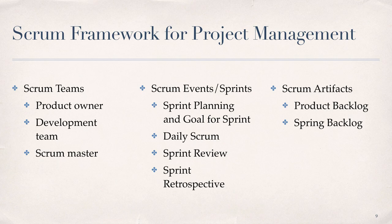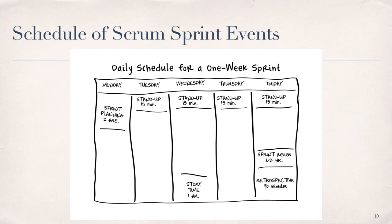Clearly, there is much more to the Scrum framework than we have covered here, but you should now have a picture of the roles, events, and artifacts that we'll be working with as we learn about and apply Agile methods to managing projects using the Scrum framework. I wanted to close out this section with an illustration of what your daily schedule for a one-week Scrum sprint might look like, showing each of the sprint events including sprint planning, daily Scrum stand-up meetings, sprint review, and sprint retrospective. The reference to story time on Wednesday is tied to the use of user stories in sprints, which is a method for documenting product requirements from the user's perspective.